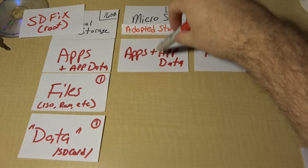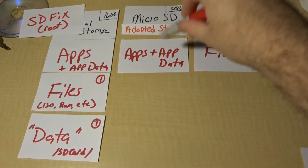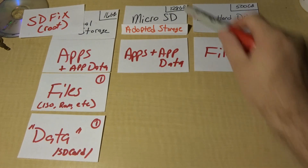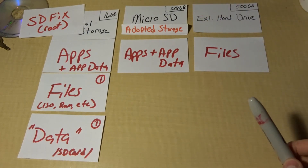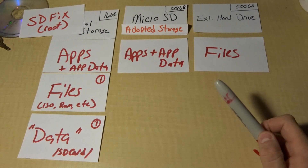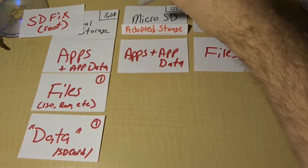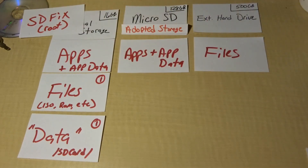Remember, this microSD card continues to only store apps and their data. So putting 128 gigs in there might not make sense — you might want to put a 64 gig in there, something to just hold a plethora of games. This microSD card is locked to this device. Once it's locked, you can't take it out, you can't bring it to your computer, you can't stick it in your camera. It belongs to the Shield TV.